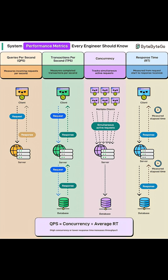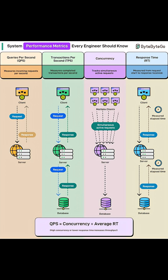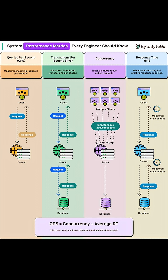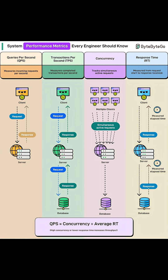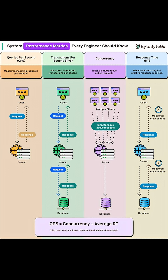Then we have concurrency. This tracks how many requests are being processed at the same time. High concurrency means your system is juggling multiple tasks simultaneously, which can stress resources if not managed properly.